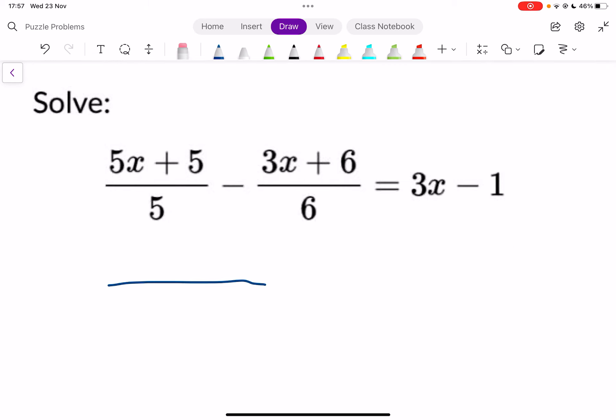What you're going to do is take a common denominator of 30. So this 5 had to get multiplied by 6 to become 30, so its top line also gets multiplied by 6. So that becomes 6 times (5x plus 5), and you need the brackets.